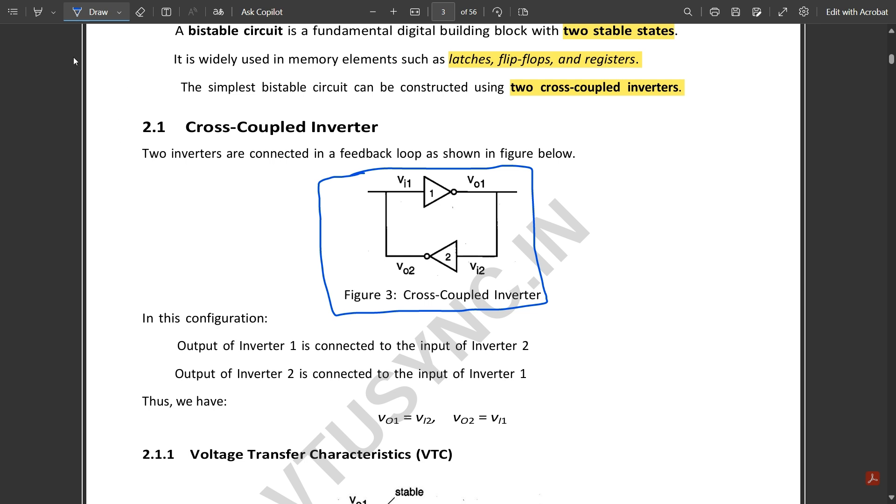In this configuration, output of inverter 1 is connected to the input of inverter 2, and output of inverter 2 is connected to the input of inverter 1.